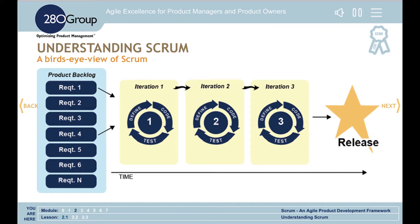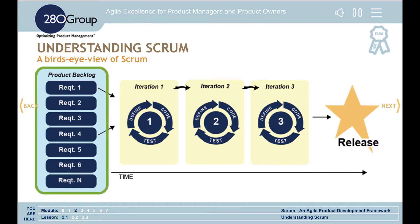In Scrum, we have a list of product requirements called the Product Backlog. The Product Backlog is an ordered list of everything you think you need in the product. These are often captured as user stories, which we'll learn more about later. These requirements are ordered from top to bottom according to business value, and they include new features, usability enhancements, bug fixes, and so on.